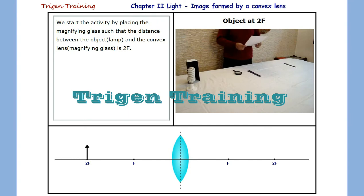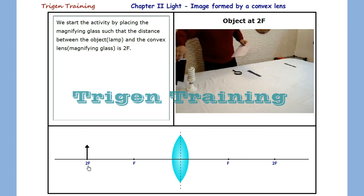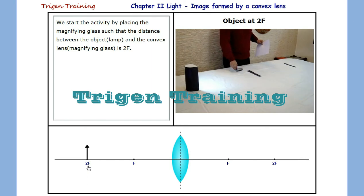The first part of our experiment would be to understand the image formation when the object is placed at 2F. We cover our spiral lamp and switch on the light. Now, we would use the two markers we have.